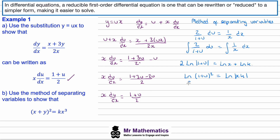Applying the multiplication rule gives the natural log of xk. Raising e to both sides, the natural log and e cancel, so (1 plus u) squared equals xk. Remembering that u equals y/x, we substitute back to get (1 plus y/x) squared equals xk.